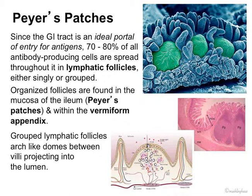We need to have a little word about Peyer's patches. Since the intestinal system is an ideal portal for entry of antigens — the bad stuff, the stuff we don't want — we have a huge amount of cells. 70 to 80 percent of all antibody-producing cells are spread throughout the GI system. Those are in lymphatic follicles that are either singly or grouped together. Those organized follicles are found in the mucosa of the ileum, a lot of the ileum. We call them Peyer's patches.